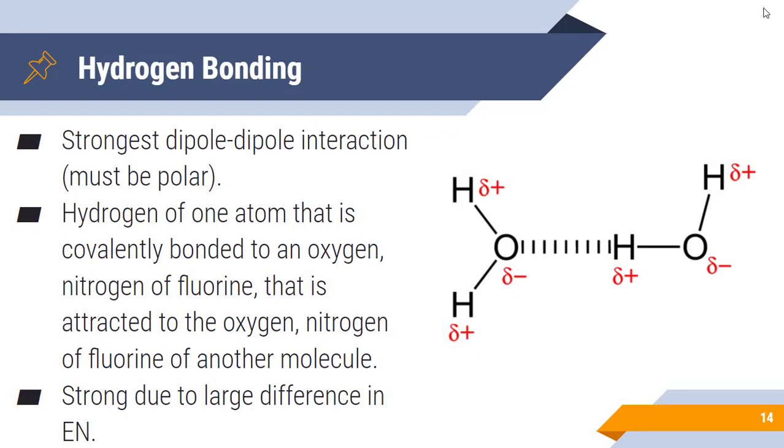The last one is hydrogen bonding, and this is the strongest dipole-dipole interaction. It must be polar as well. The hydrogen of one atom that is covalently bonded to an oxygen, nitrogen, or fluorine is attracted to the oxygen, nitrogen, or fluorine of another molecule. Not only does the hydrogen have to be covalently bonded to an oxygen, nitrogen, or fluorine, but then it has to also be attracted to an oxygen, nitrogen, or fluorine that is attached to a hydrogen. This particular dipole-dipole interaction is very strong due to the large difference in electronegativity. That's why it has to be attached to oxygen, nitrogen, or fluorine - the electronegativity differences have to be very strong for the dipole to be strong. Water conducts hydrogen bonding.